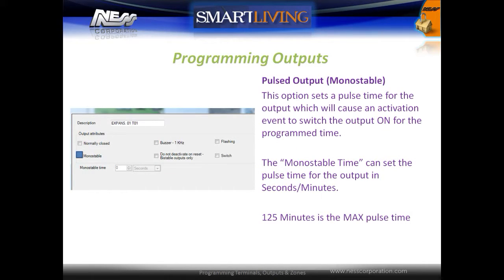The mono stable option is a momentary pulsed output option. This option sets a pulse time for the output, which will cause an activation event to switch the output on for the programmed time. The mono stable time setting can set the activation time for the output in seconds or minutes. The maximum programmable time is 125 minutes.